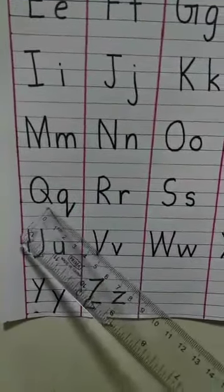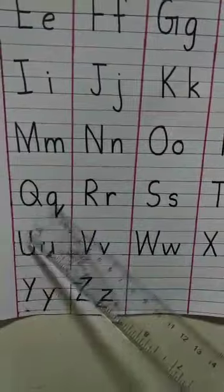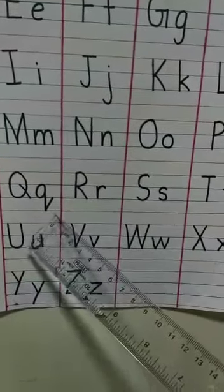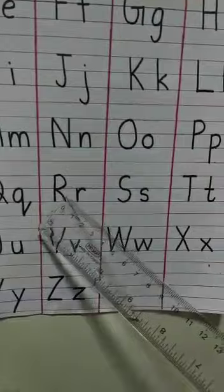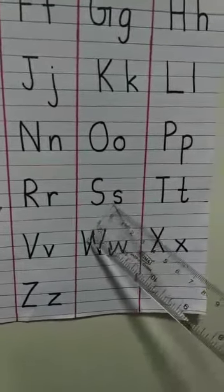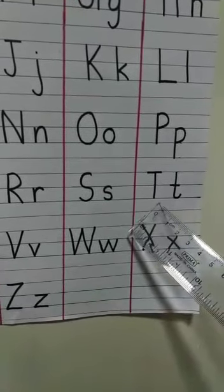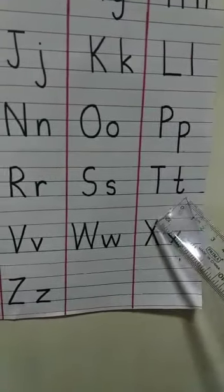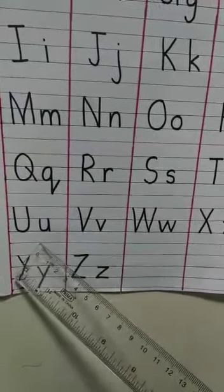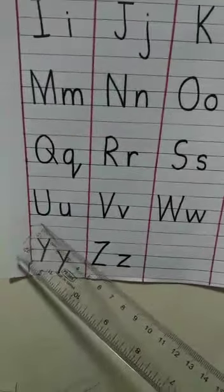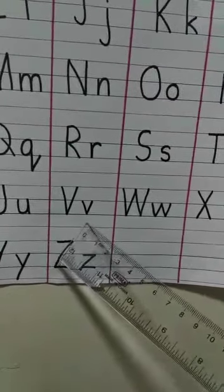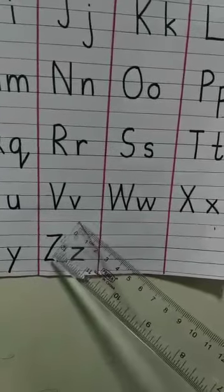Q for queen, capital letter Q, small letter q. R for rabbit, capital R, small r. S for snake, capital S, small s. T for telephone, capital T, small t. U for umbrella, capital U, small u. V for violin, capital V, small v.